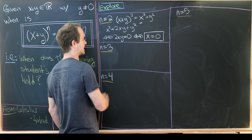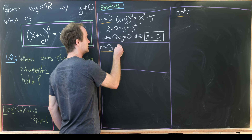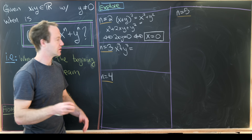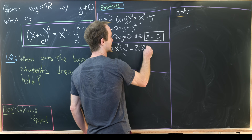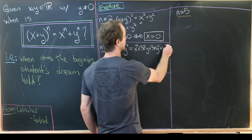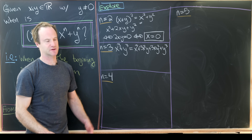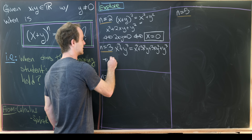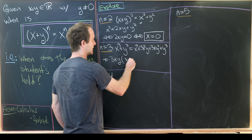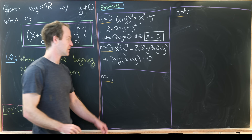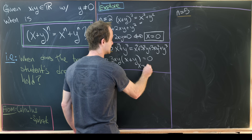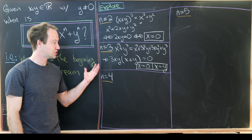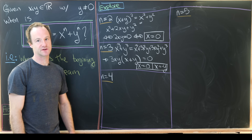Now for the n = 3 case. We need x³ + y³ = (x + y)³, and multiplying out the right side gives x³ + 3x²y + 3xy² + y³. Canceling x³ and y³ from both sides and factoring out 3xy leaves x + y = 0. So we've got two solutions: x = 0 or x = −y.